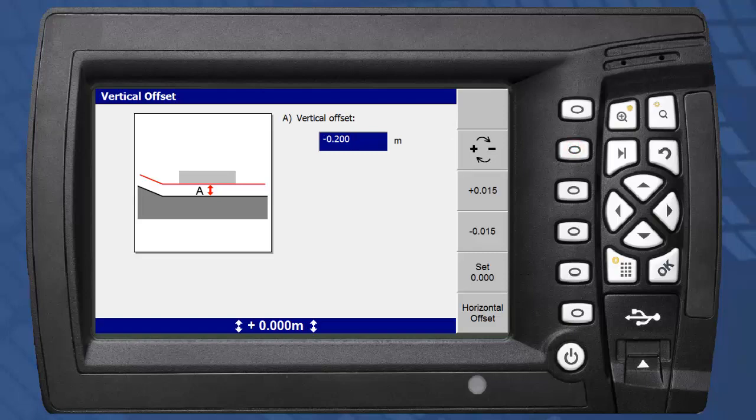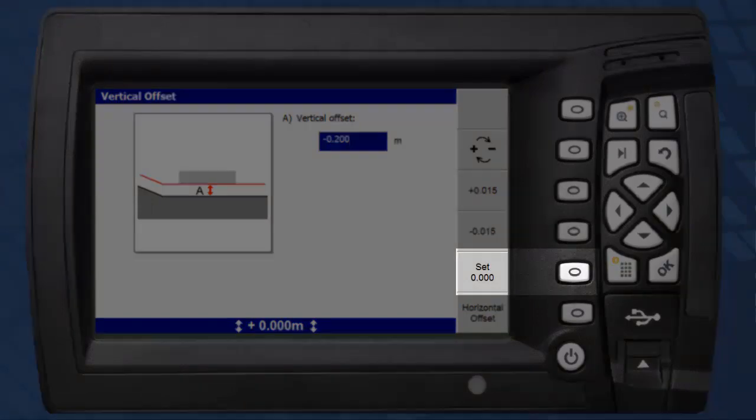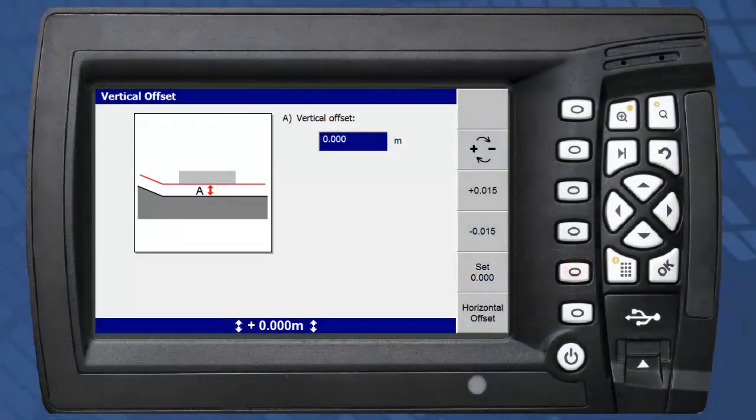The vertical offset can be reset to zero with the corresponding soft key. We will apply a vertical offset of minus 0.5 metres.